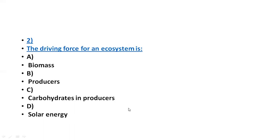The driving force for an ecosystem is carbohydrates in producers — that is the driving force for the ecosystem. Option C is the correct answer: carbohydrates in producers.